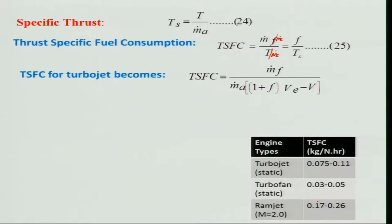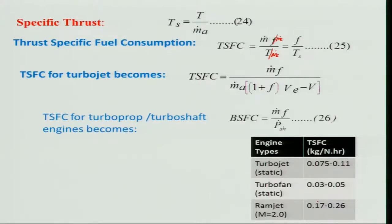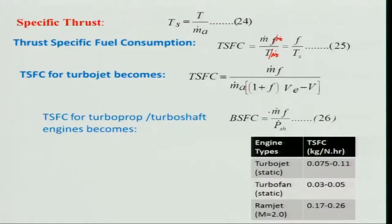For turbo-prop and turbo-shaft engines, TSFC becomes brake specific fuel consumption (BSFC) = ṁ_f / P_shaft. BSFC is also used routinely for automobile engines. However, for turbo-prop specifically, there is some thrust produced by expansion of gas in the exhaust nozzle — so BSFC alone is not sufficient for turbo-prop, though it works well for turbo-shaft.